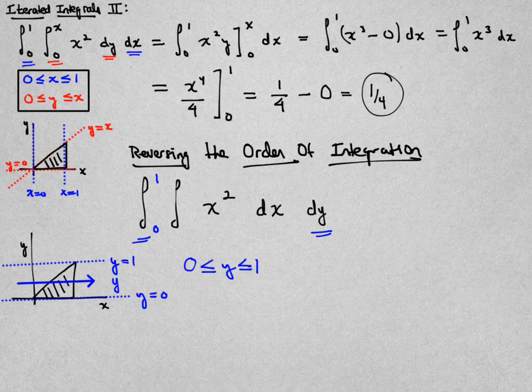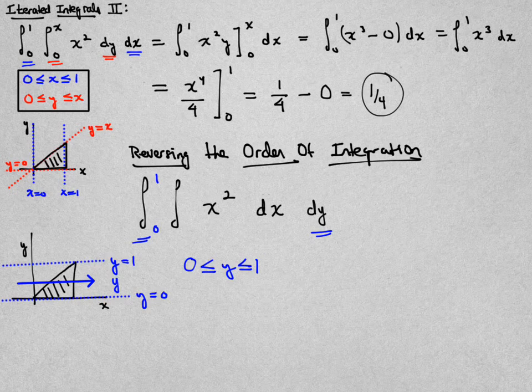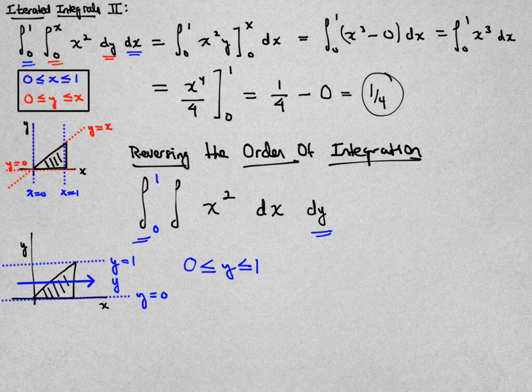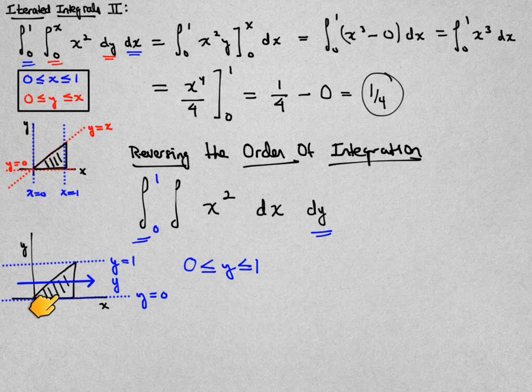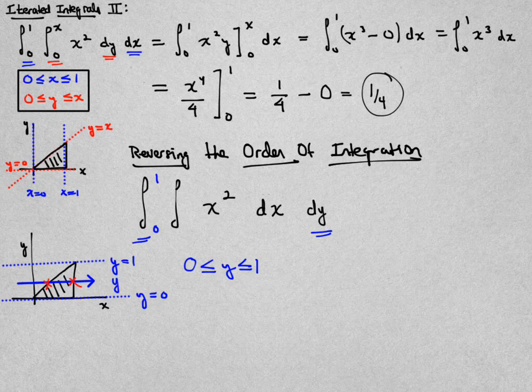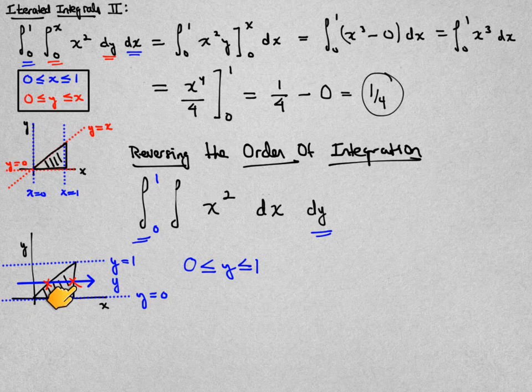I now look at a generic value of y, and I fix that, and I'm going to think about moving through this region from left to right, and what the corresponding values of x are in that region. It enters at this point here, and exits at that point there.